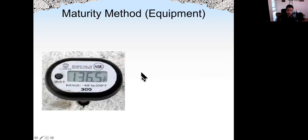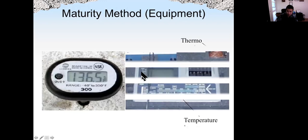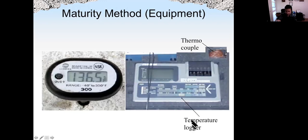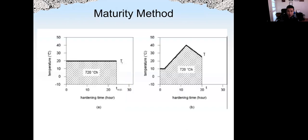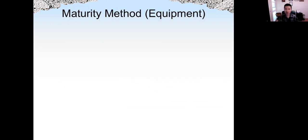The equipment to measure maturity is very simple. We need a data logger and a thermocouple — a copper wire connected to the data logger, where the other end is inserted in the middle of the concrete. Using the data logger, we can monitor the temperature versus time, and get the temperature-time curve. From there, we can easily calculate the maturity for any type of concrete.